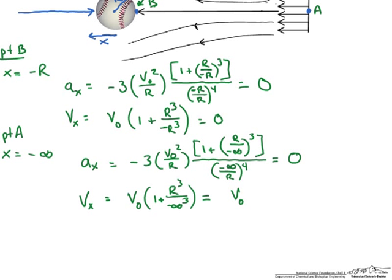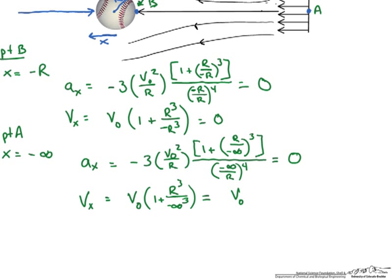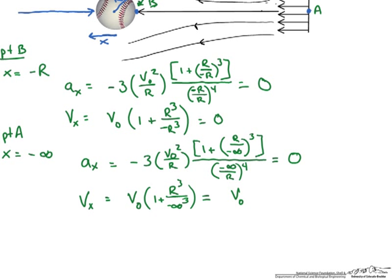Now what would be interesting is to calculate where the maximum deceleration is along that streamline from A to B. So to do that, we are going to take the derivative of the acceleration with respect to time. And if I break up those terms, I get the following.